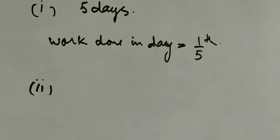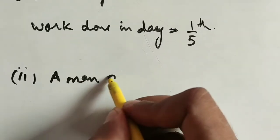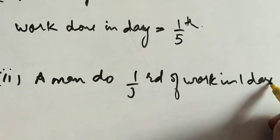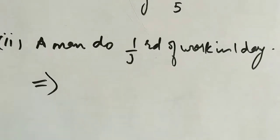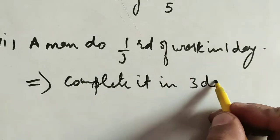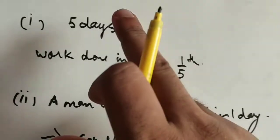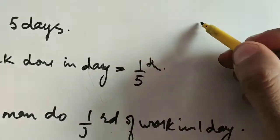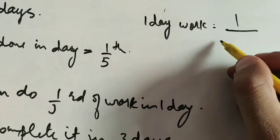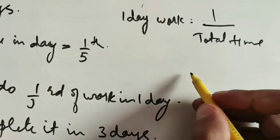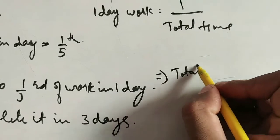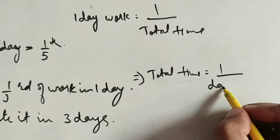Conversely, if a man does 1/3rd of the work in 1 day, it means he will complete the work in 3 days. So, if total time taken is given, then 1-day work will be 1 divided by total time. And on the other hand, if we have the 1-day work, then total time will be the reciprocal of the 1-day work.